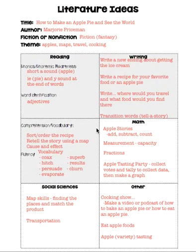I'd like to share my literature ideas for the story 'How to Make an Apple Pie and See the World' by Marjorie Prisman. The story is fiction within the fantasy genre, and some themes I've used the story for in the past would be apples, maps, travel, and cooking.